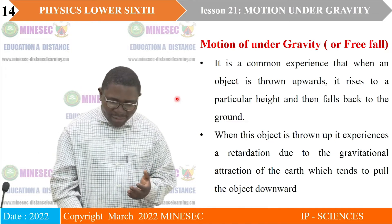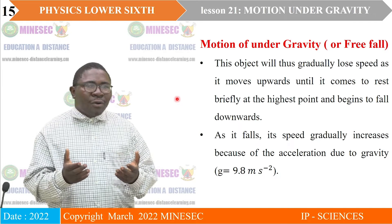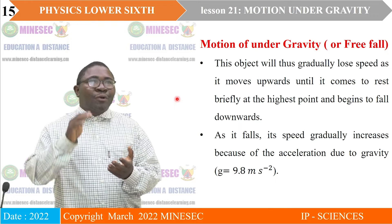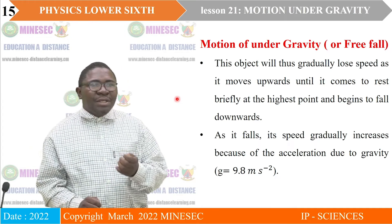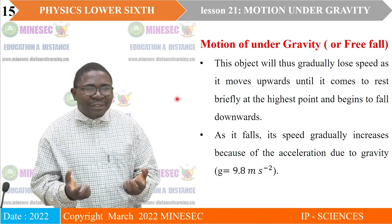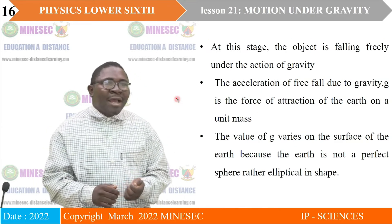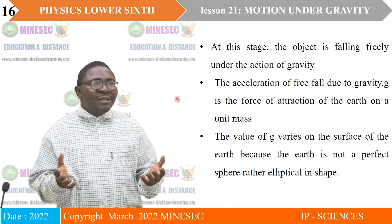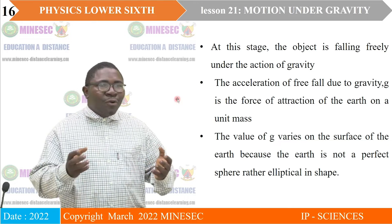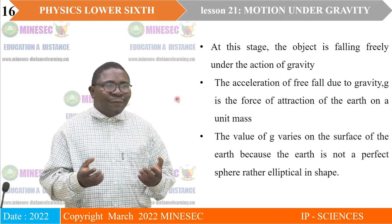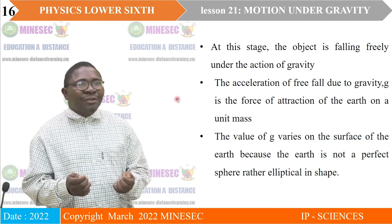The object gradually loses speed as it moves upward until it comes to rest — a brief rest — before starting to fall again. As it falls, its speed gradually increases because of acceleration due to gravity, since it is moving closer to the earth in the direction the earth is pulling it. At this stage, the object is falling freely under the action of gravity — only the earth applies a force on it; no other external bodies apply a force. The acceleration of free fall due to gravity is force per unit mass.